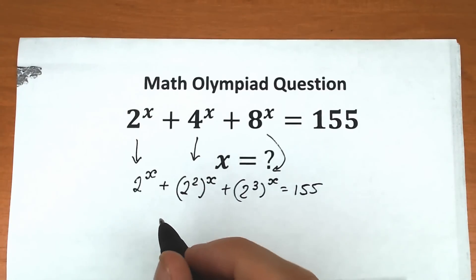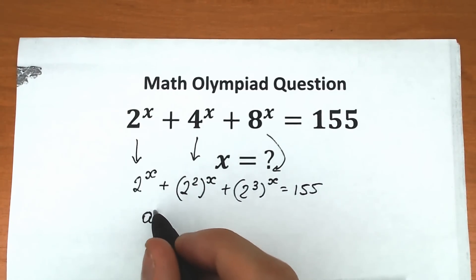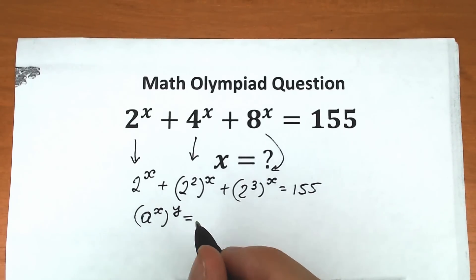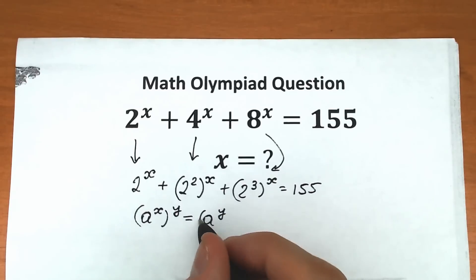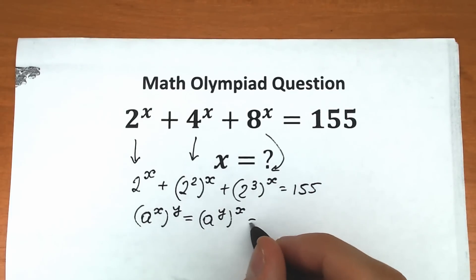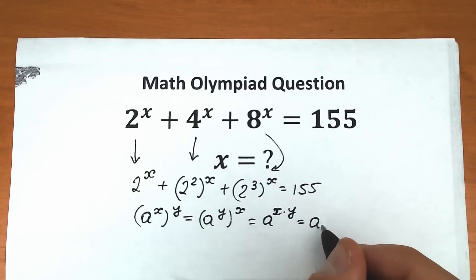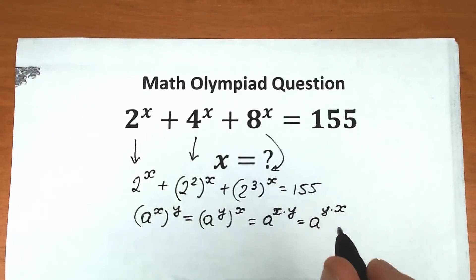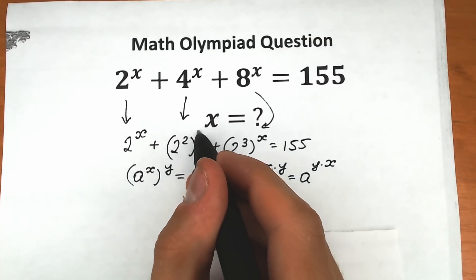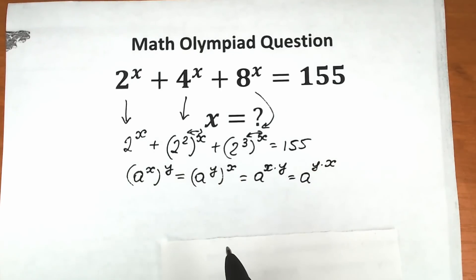We need to know about an interesting rule — sometimes called the rule of interchange. If we have a to the power x, raised to the power y, we can also write it as a to the power y raised to the power x. We can swap the powers inside and outside because this equals a to the power x times y, which is the same as a to the power y times x. Using this property, let's swap the positions of 2 and x, and 3 and x in our expression.